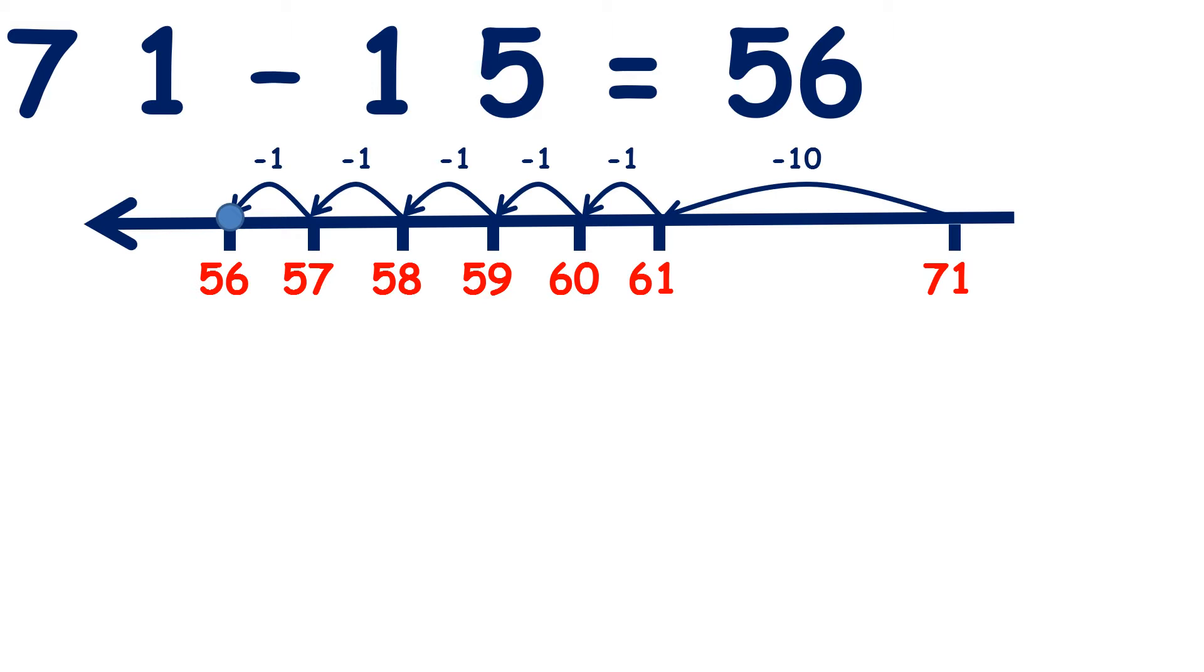Now pause the video and see if you can write the numbers 71, 15, and 56 in a triangle like we did in our last question. So we have 71 on top—remember the largest number always goes on top—and we've subtracted 15 to get 56.